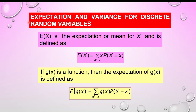Expectations and Variance for Discrete Random Variables. The expectation of X, or mean of X, is defined as the summation of each value of x times the probability for each x. If g(x) is a function, then the expectation of g(x) is defined as the summation of g(x) times the probability of x equals to x.